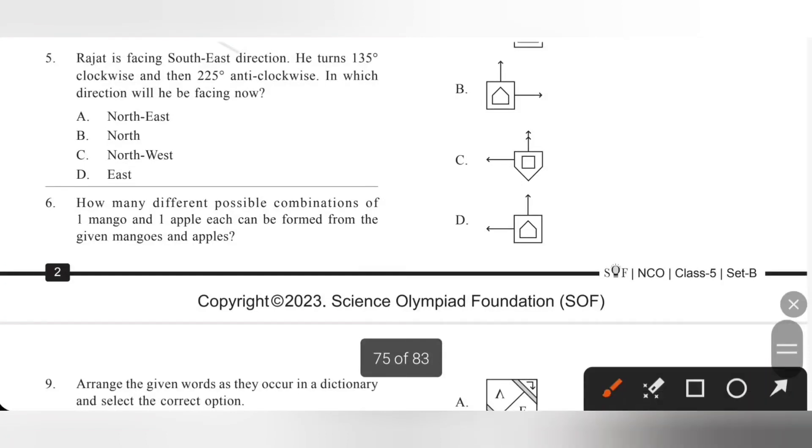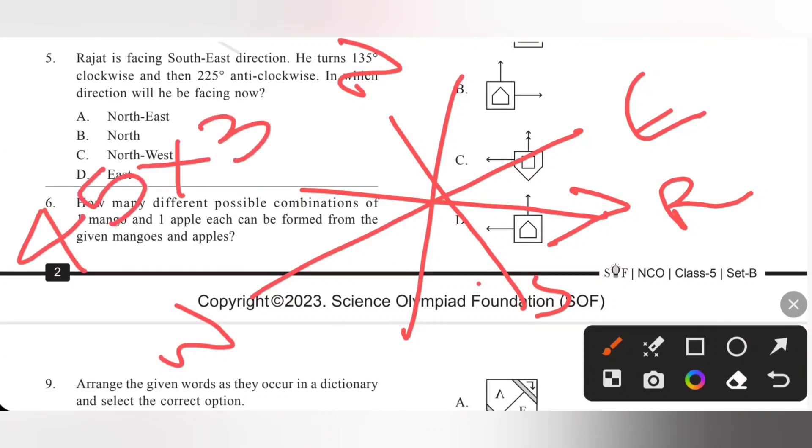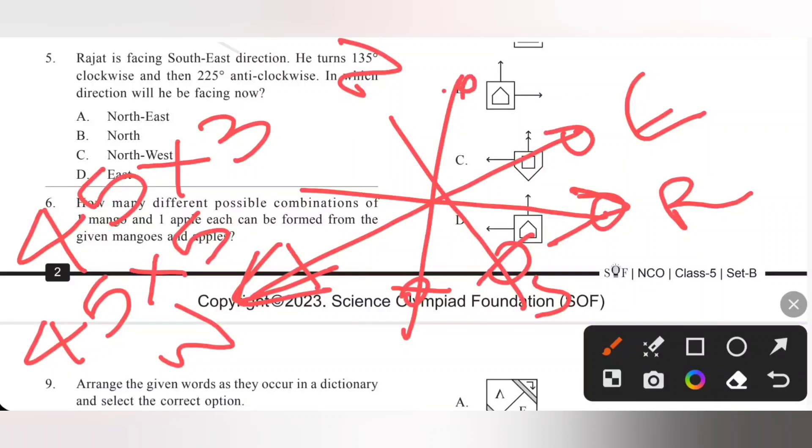Fifth one, Rajat is facing southeast direction. He turns 135 degrees, so for each 45 degrees he will move 1 step. 135 degrees means 45 degrees into 3, so clockwise 3 steps: 1, 2, and 3. So now he is in west direction. Then 225 degrees anticlockwise, so 45 degrees into 5 anticlockwise: 1, 2, 3, 4, 5. Now he is in northeast direction. In which direction will he be facing now? Northeast direction. Option A is the correct answer.